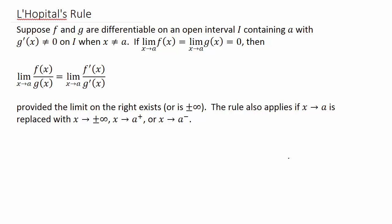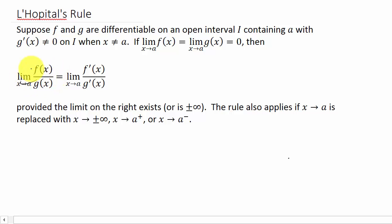Alright, so here we go. Another example using L'Hôpital's rule. As I've said in the other videos, basically what we have is the limit of f(x) over g(x) as x goes to a, and we get 0 over 0, infinity over infinity, or negative infinity over negative infinity. Then L'Hôpital's rule says that the limit of this is equal to the limit of the derivative of the numerator over the derivative of the denominator as x goes to a, provided that this limit exists or is plus or minus infinity. The rule also applies if x goes to plus or minus infinity, or x goes to a from the right or the left.